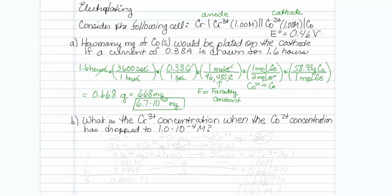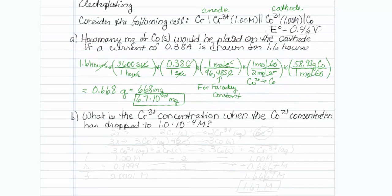The next part of this asks: what is the chromium 3+ concentration when the cobalt 2+ concentration has dropped from its starting value of 1 molar to 1 times 10 to the minus fourth molar? I am going to need the balanced reaction for this.